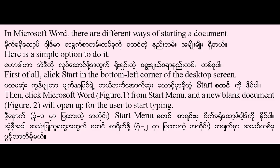In Microsoft Word, there are different ways of starting a document. Here is a simple option to do it. First of all, click Start in the bottom left corner of the desktop screen. Then, click Microsoft Word (figure 1) from the Start menu and a new blank document (figure 2) will open up for the user to start typing.